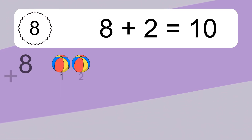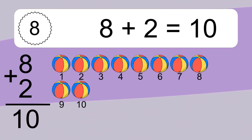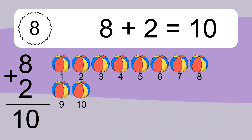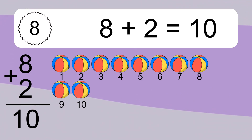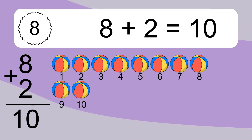8 plus 2 equals what? 8 plus 2 equals 10. Let's count it. 1, 2, 3, 4, 5, 6, 7, 8, 9, 10.